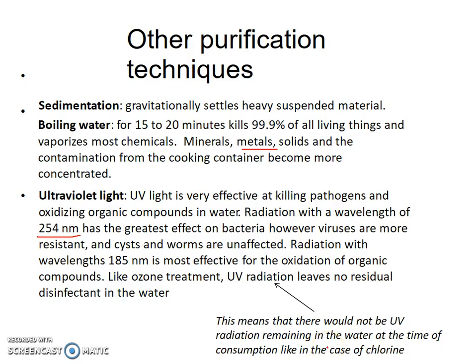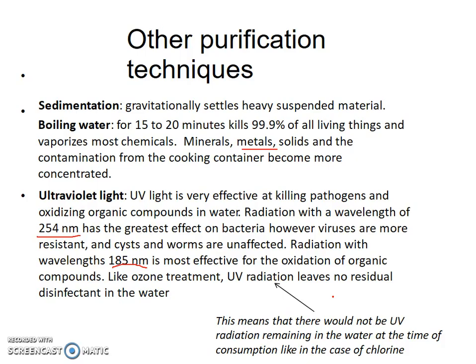UV light is useful in killing bacteria, although you're probably not going to get viruses, cysts, or worms. If you're targeting the removal of organic compounds, you can use the 185 nm wavelength, which will oxidize organic compounds. The benefit of UV light, just like aeration, is that it doesn't leave any residual cleaning agent. It's a mild way of cleaning, and the benefit is that it leaves a better taste compared to chlorine.